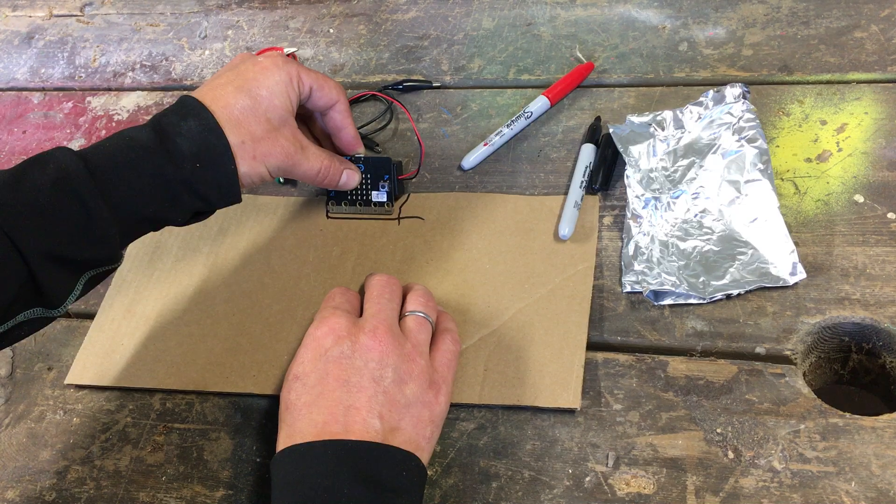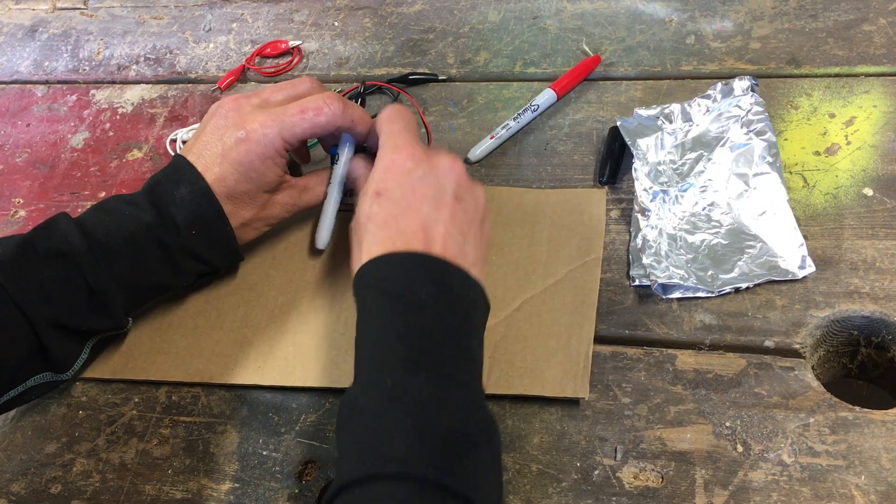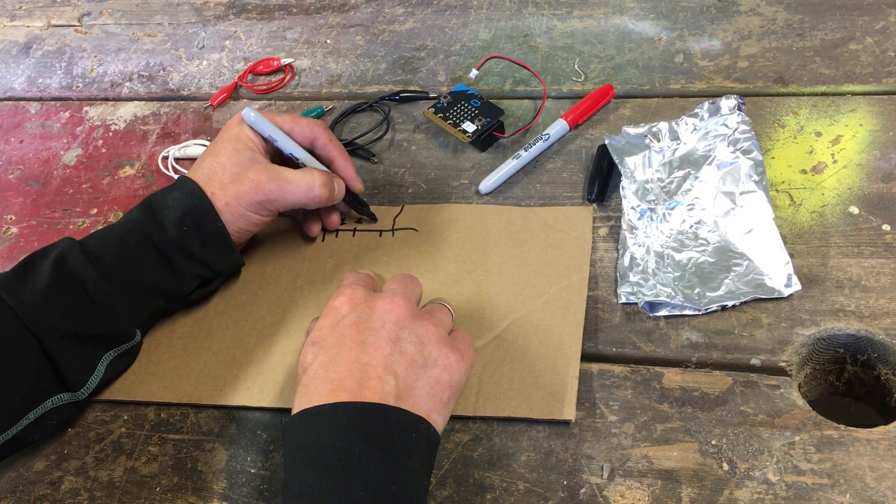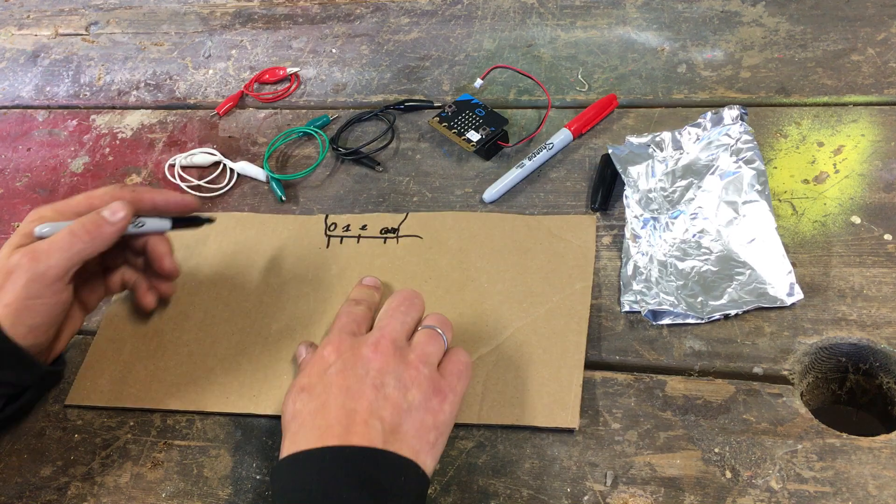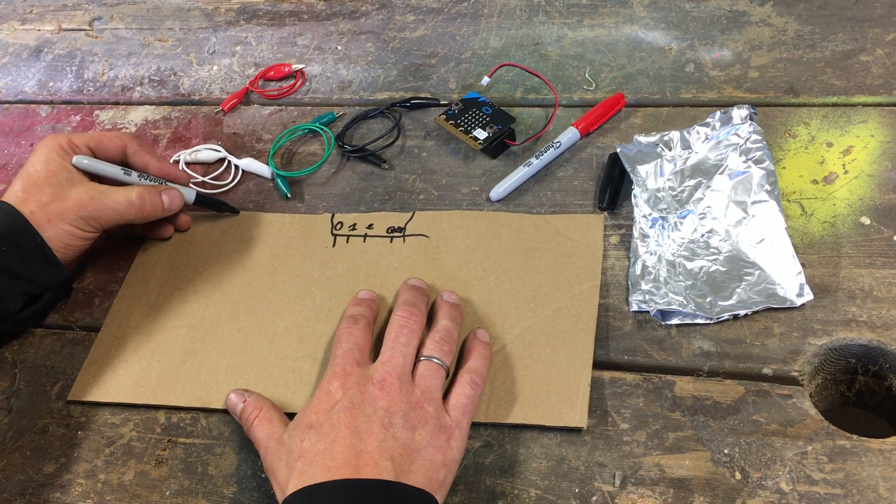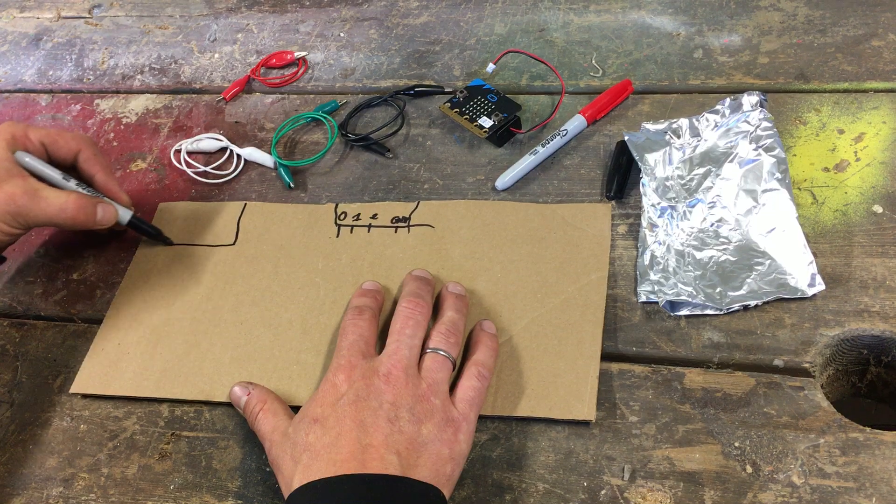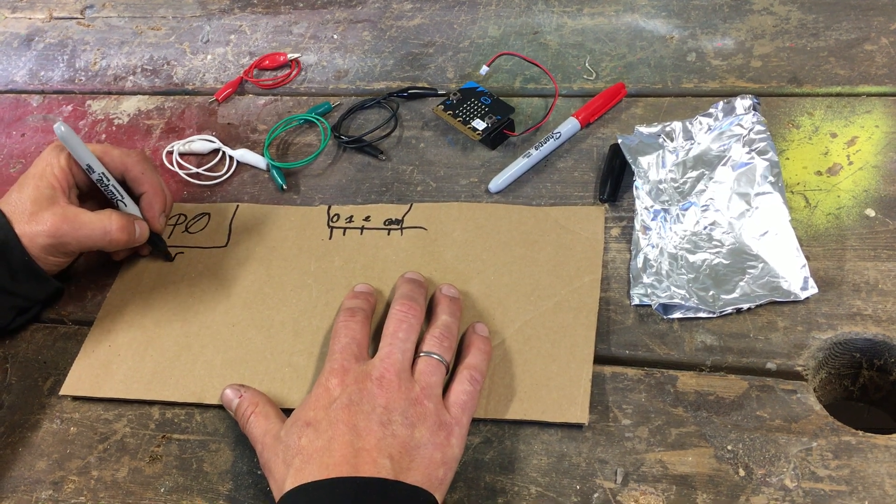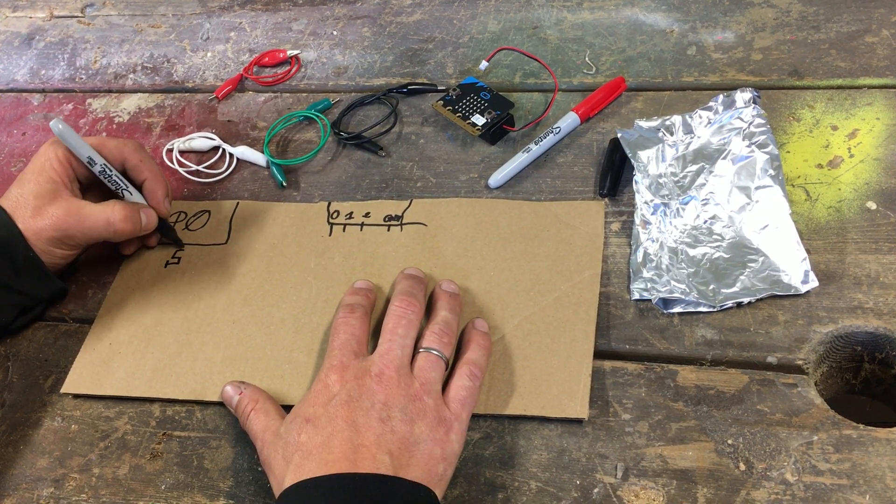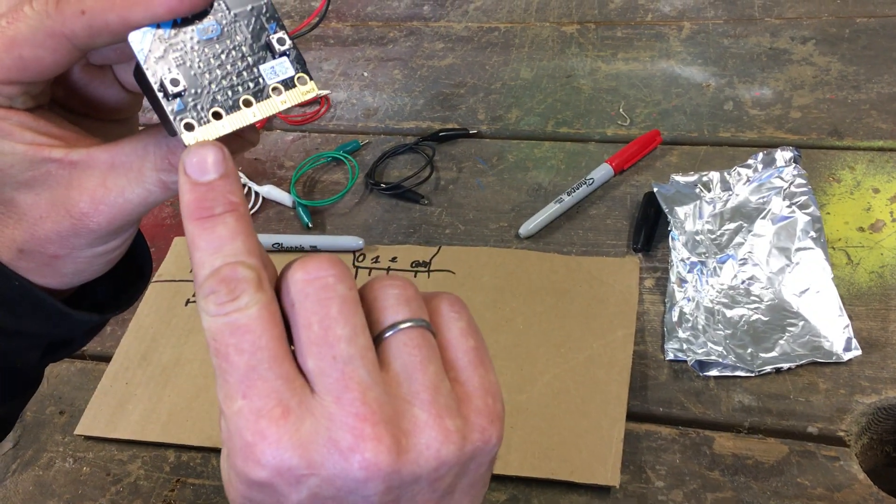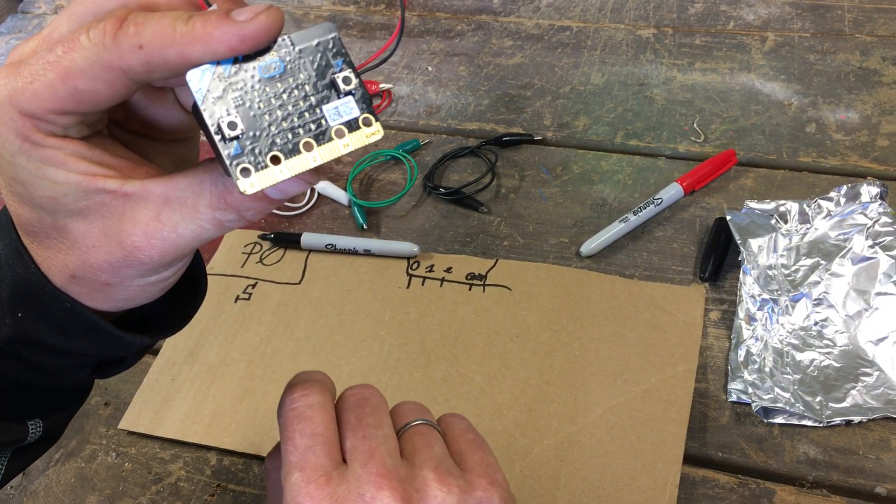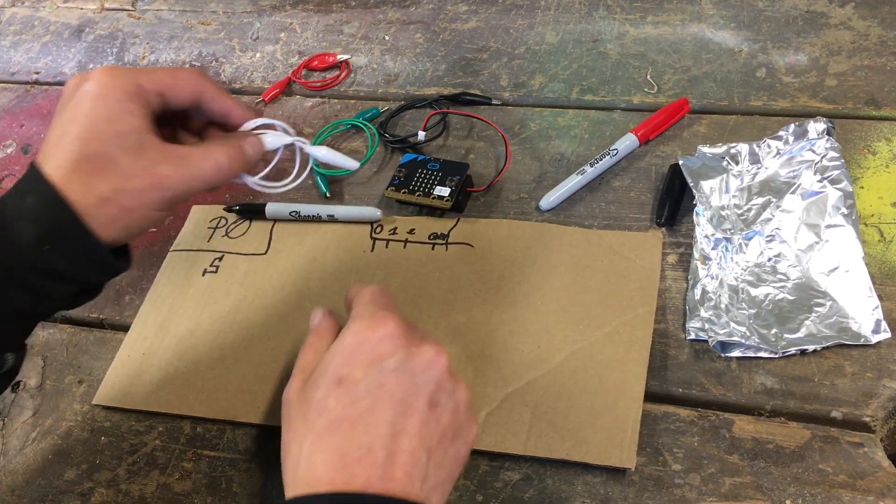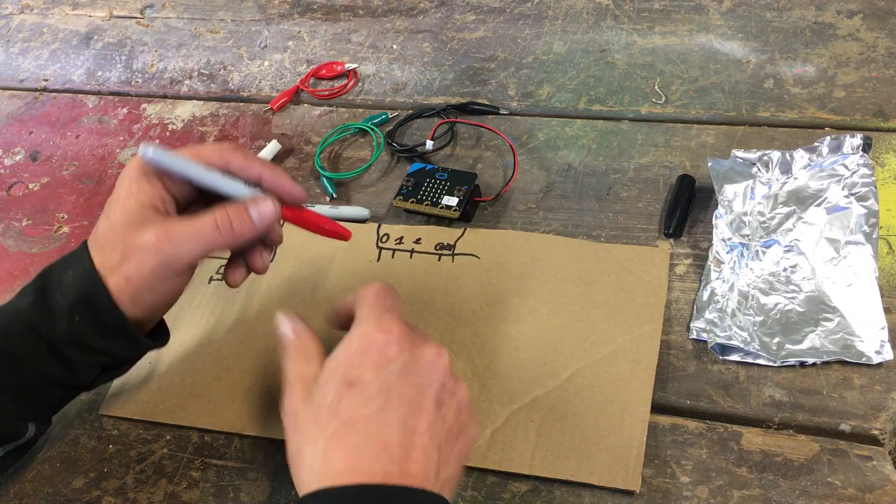I'm going to mark pin 0, 1, 2, and ground. For my game, I'm going to have a section here and I'm going to use P zero. That's one of the pins on the micro:bit. If you zoom in, you'll see it's called zero—that's pin zero, the first hole.